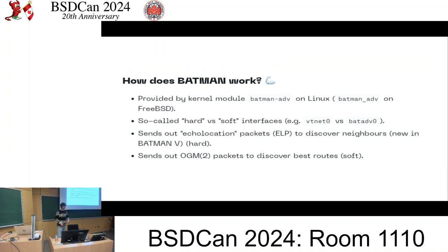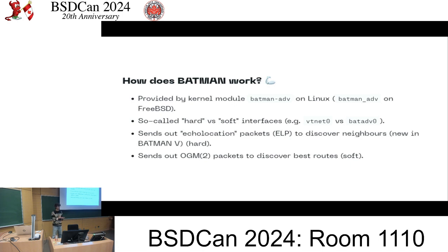On Linux this is provided by a kernel module called Batman Advanced, and its equivalent on FreeBSD is the same with an underscore. There are hard and soft interfaces: a hard interface is an actual hardware interface - in a VM that would be vtnet0. The soft interface is the Batman interface - batadv0 - which groups together hard interfaces. Your OS interacts with the soft interface and Batman handles dispatching to hard interfaces. Since Batman V, echolocator packets are sent over hard interfaces to discover links, and OGM2 packets are sent between soft interfaces to discover the best routes throughout your network.